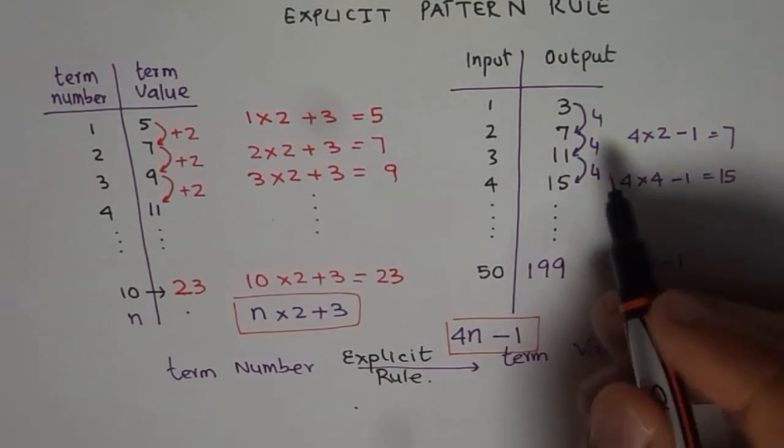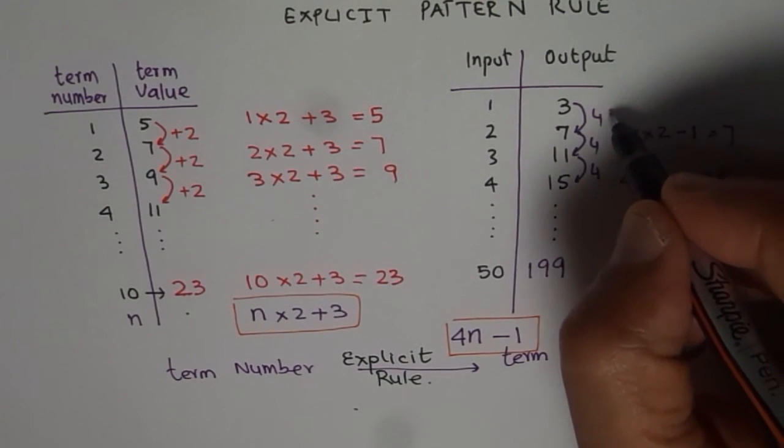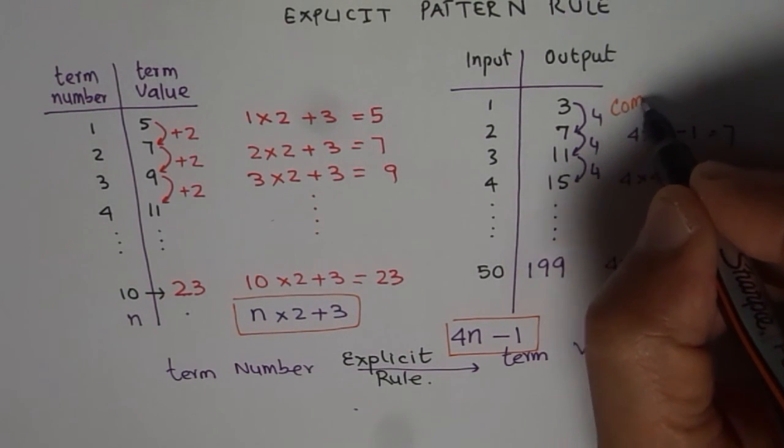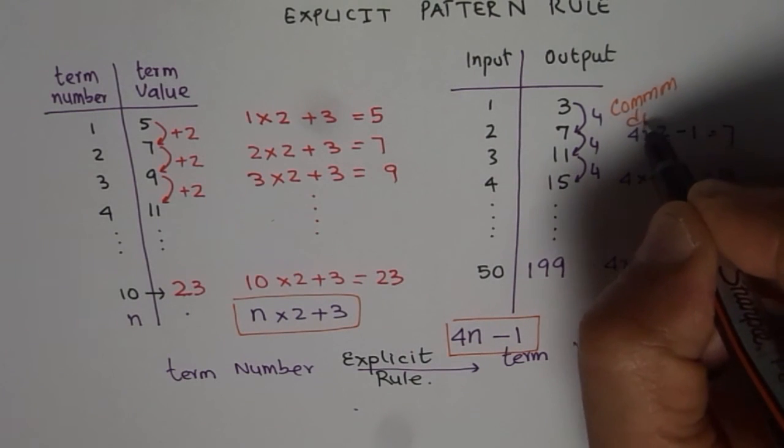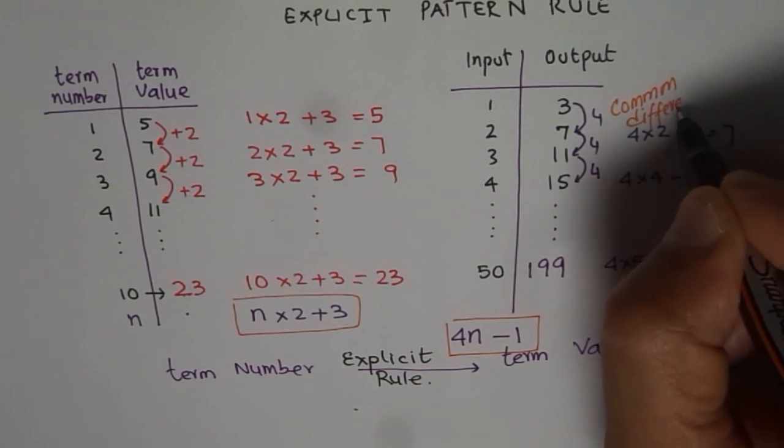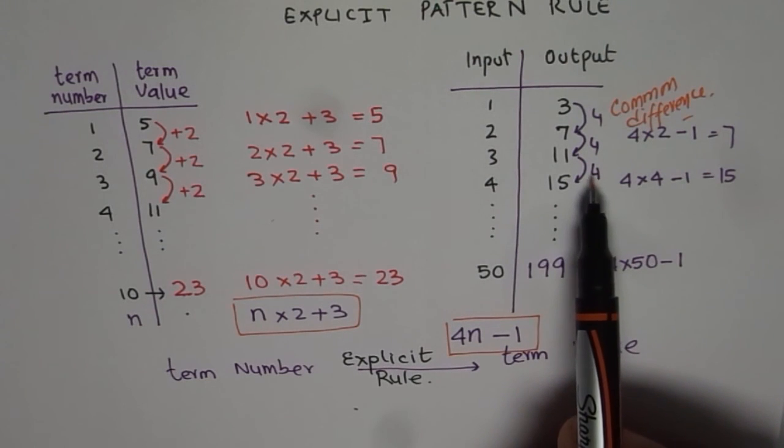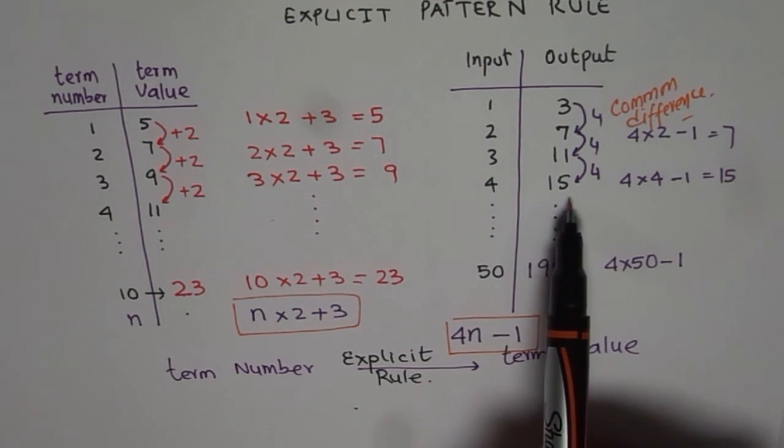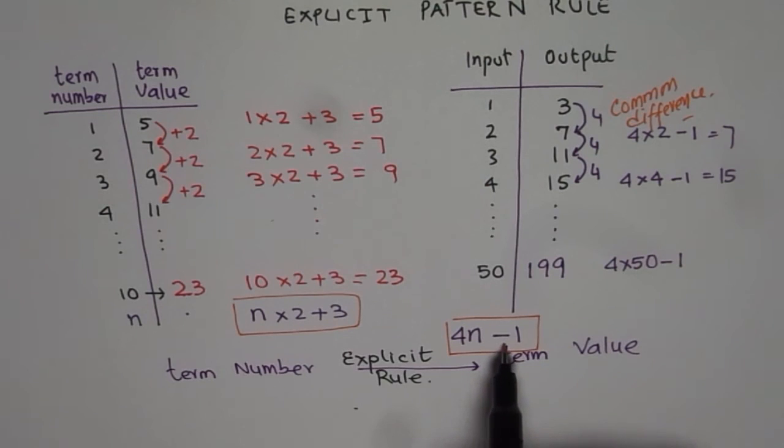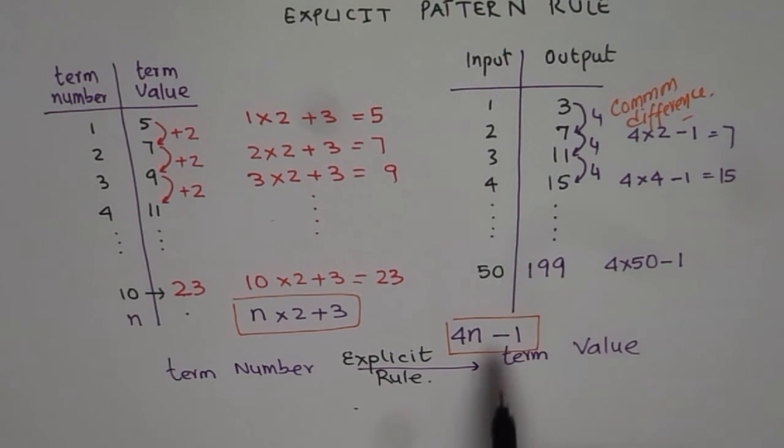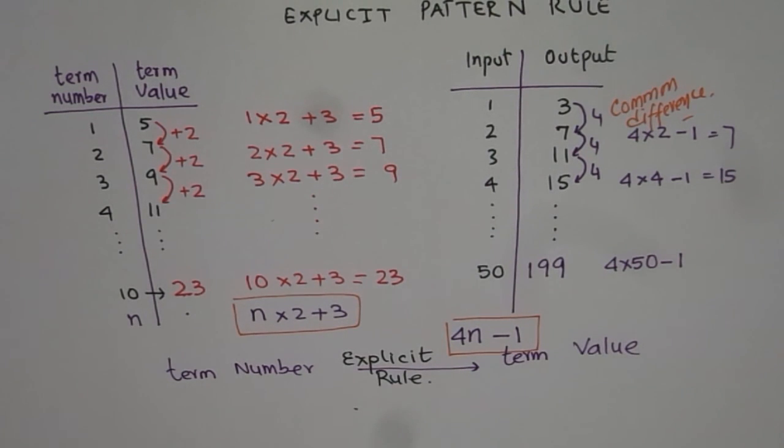So that is what magic explicit rule has. You can directly get the term value from the term number using your rule. So we developed two of them and so easily. So the key here is to find common difference. These numbers here are common difference. Once you find common difference, then common difference should be multiplied by input and you have to figure out what to add or subtract to get the output. Once you do that, you have your formula, so handy. I hope this helps. Thank you and all the best.